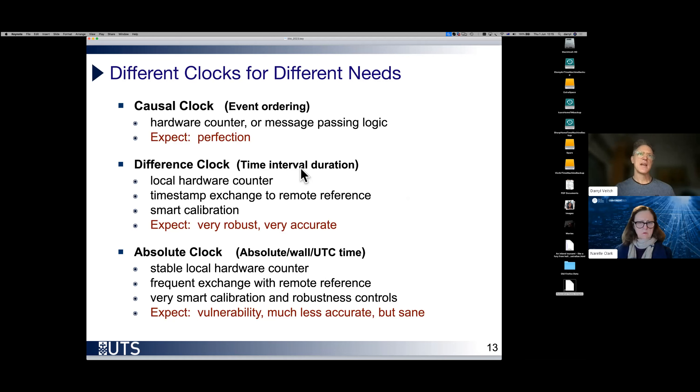Our next thing that clocks are used for is to measure the duration of time intervals. I have coined the term difference clock, by which I mean the clock specialized to be able to do that well, at least over short time intervals. This can also be based on a local hardware counter, timestamp exchange to remote reference in order to do a smart calibration. If we do this well, we can expect an extremely robust, extremely accurate difference clock.